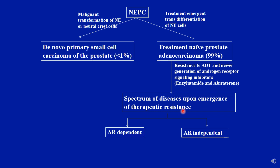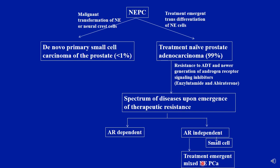It can also be AR-dependent. AR-independent resistance can be small cell or treatment-emergent mixed neuroendocrine prostate cancer, which is the most common form of neuroendocrine prostate cancer. AR-dependent resistant prostate cancer presents as castration-resistant prostate cancer with standard phenotypic features.